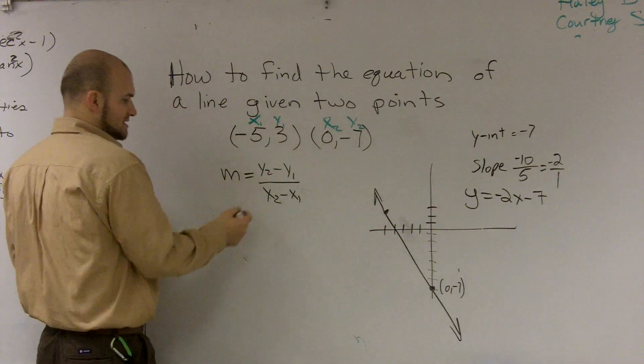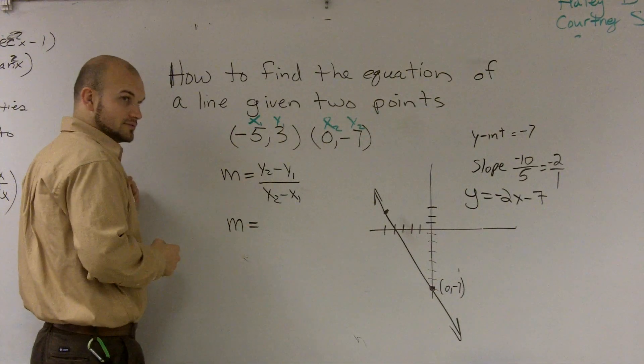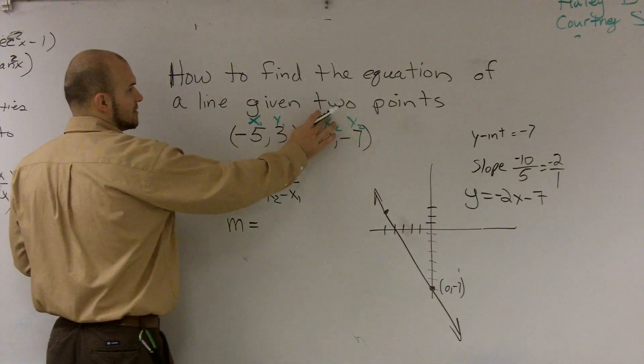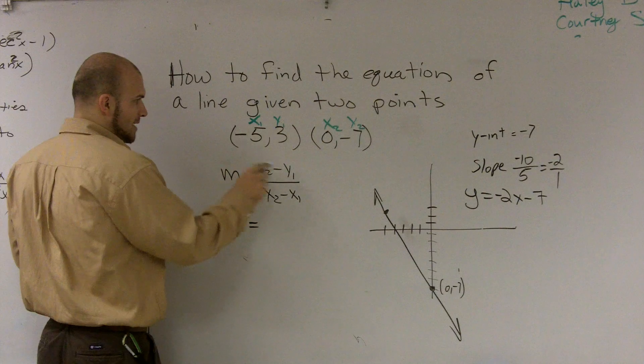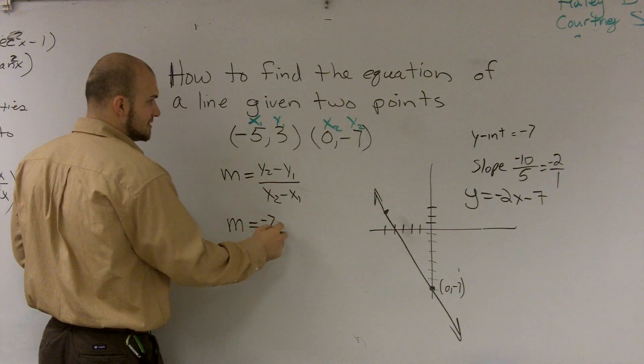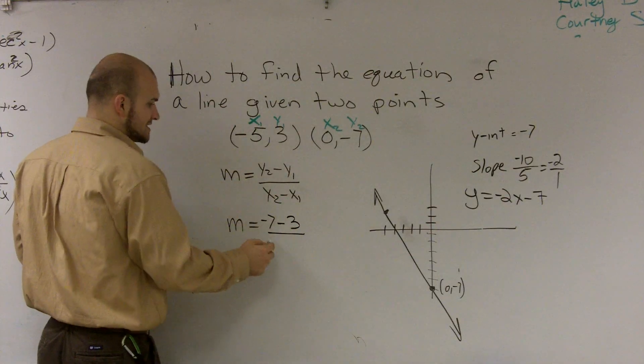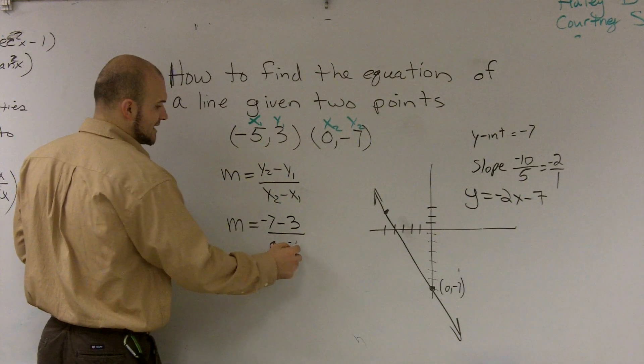So all I do is I plug this into my formula to find my slope. So what I'm going to do is I'm plugging my y2, so I'll do negative 7 minus y1, which is 3, over x2, which is 0, minus negative 5.